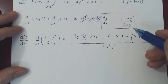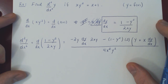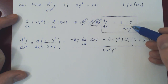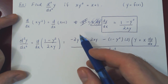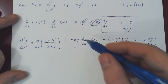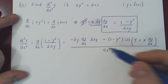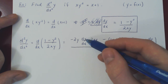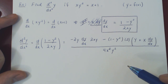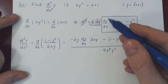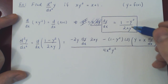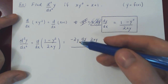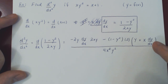So here's our second derivative, but we want it as a function of x and y only, just as the first derivative. Our second derivative currently contains dy/dx. We can easily replace dy/dx as a function of x and y, since we previously found dy/dx equals (1 minus y²) over 2xy. So now we just substitute, and the rest of the work will be algebraic simplifications.